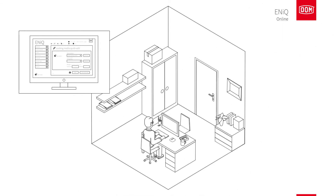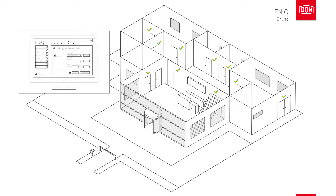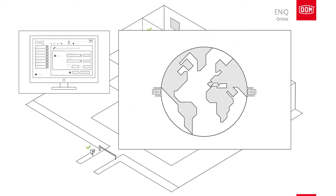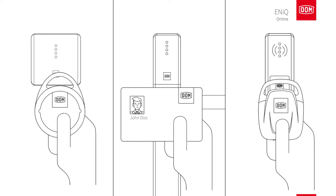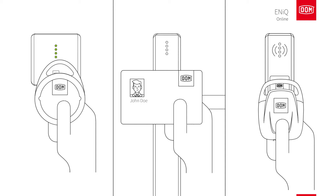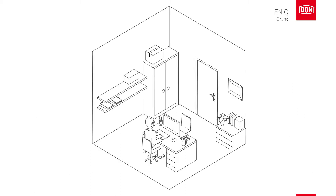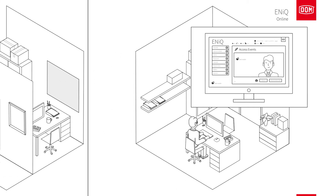In the Annex software, Fred defines access authorizations — who has access to what and when — for all employees. The software then instantly programs all devices accordingly. Because all data is transferred through a secure internet connection, it doesn't matter if a device is in the same building or on the other side of the planet. Every employee has their own personal transponder, and each lock knows which transponder is allowed access and which isn't. This way, all employees get exactly the authorizations they need, from doors to lockers. Thanks to the live connection, every access event is directly visible in Fred's software, giving him instant insights into what's going on.